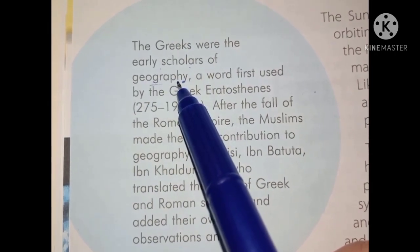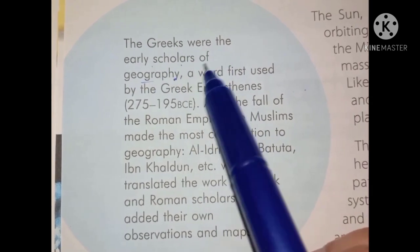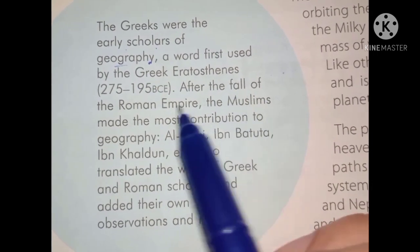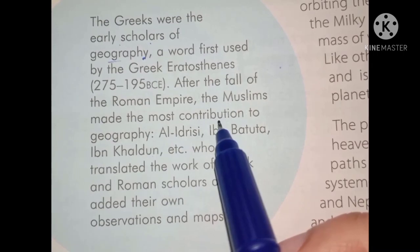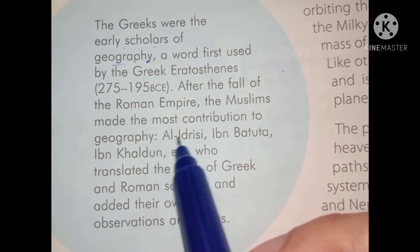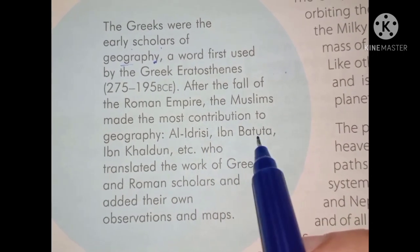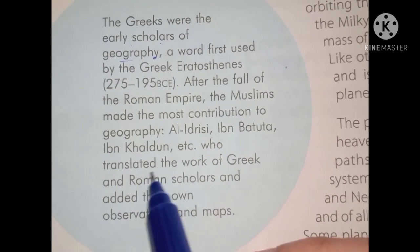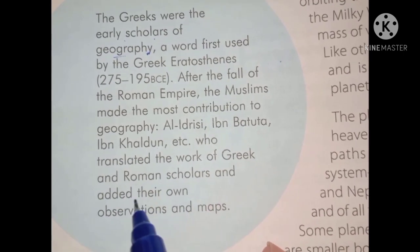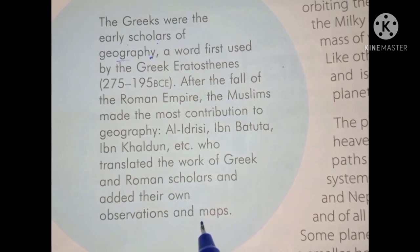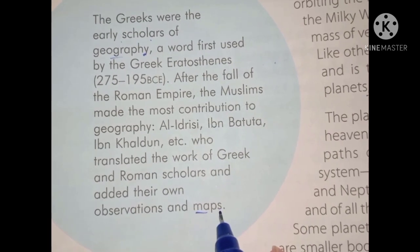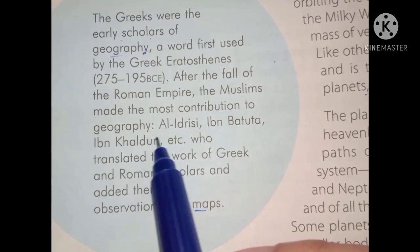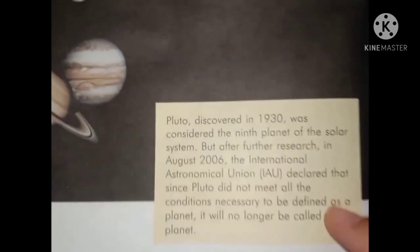Regarding the origin of geography, the Greeks were the early scholars of geography — a word first used by the Greek Eratosthenes. After the fall of the Roman Empire, the Muslims made the most contributions to geography. Famous Muslim geographers include Al-Idrisi, Ibn Batuta, and Ibn Khaldun, who translated the work of Greek and Roman scholars and added their own observations and maps.